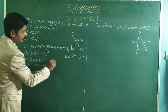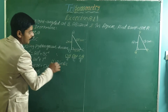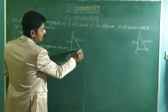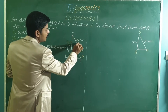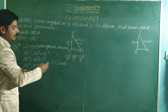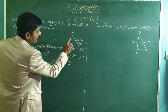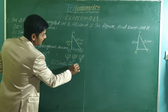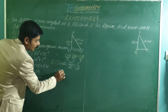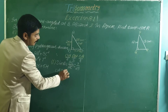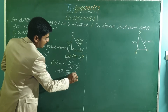Now let us find sin A. With respect to angle A, BC is the opposite side, AB is the adjacent side, and AC is the hypotenuse. Sin is opposite by hypotenuse, so sin A equals BC over AC, which is 7 over 25. Similarly, cos A is adjacent by hypotenuse. The adjacent side is AB and the hypotenuse is AC, so cos A equals 24 over 25.